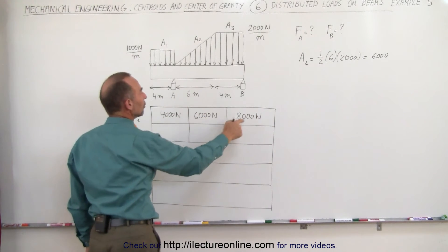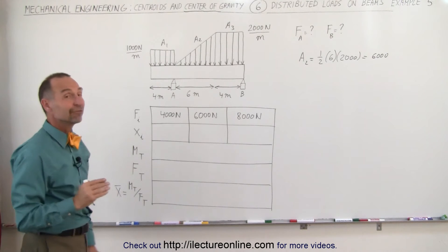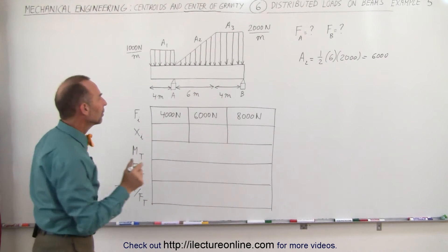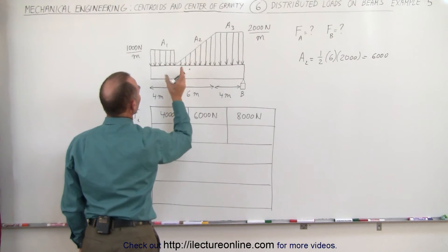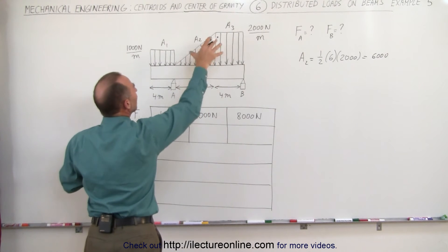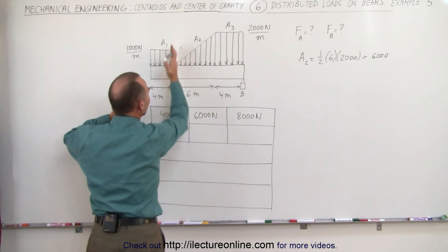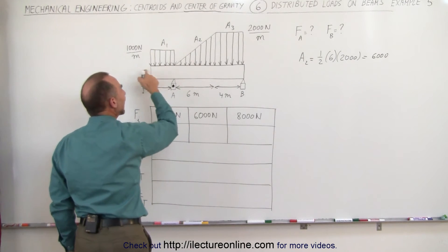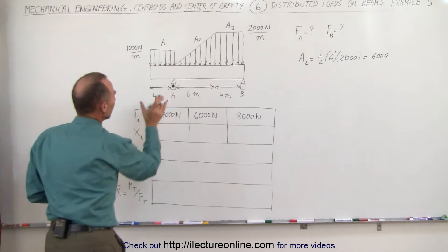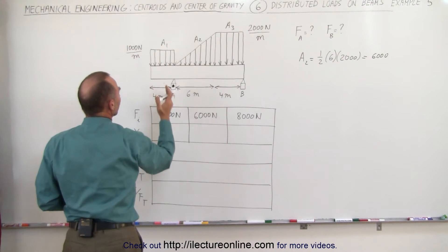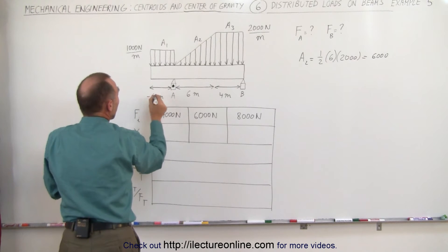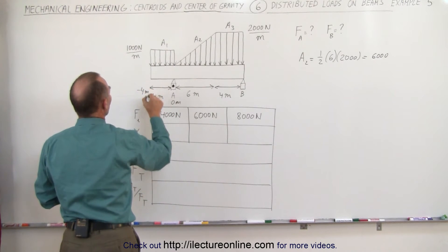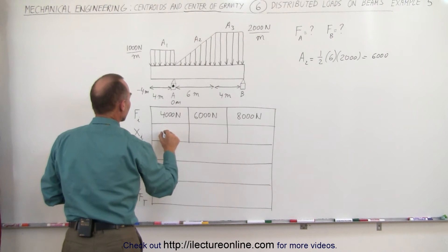So the force contributions of the three segments are 4,000 newtons, 6,000 newtons, and 8,000 newtons. Now we need to find the x-coordinate of the centroid of each of the three segments. The pivot point will be at A, because any load to the left of A will cause the beam to turn one way, and any load to the right will cause it to turn the other way. This means the first section has a negative centroid — a negative distance. Since it's rectangular, the centroid is at the halfway point, at minus 2 meters relative to A.